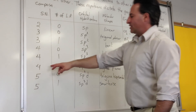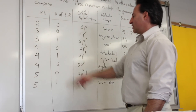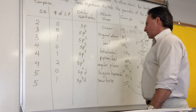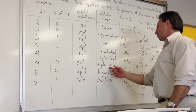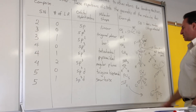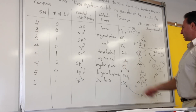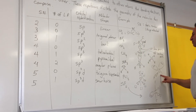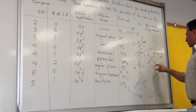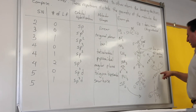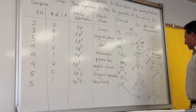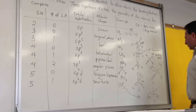If you have four things attached to a central atom, two of them being lone pairs, you get SP3 hybridization and the molecule is called angular planar. Water has that structure — with two lone pairs pushing down, the bond angle is even more restricted, in the vicinity of 105 degrees.